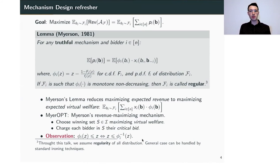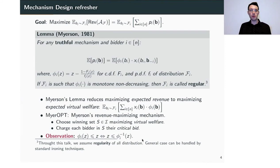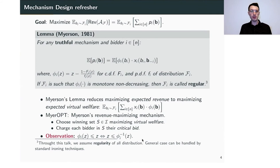In the case of regular distributions, Myerson's Lemma allows us to reduce the problem of maximizing expected revenue to that of maximizing expected virtual welfare. The optimal mechanism, which we call Myerson-Opt, works as follows: each bidder submits their valuation as their bid, the mechanism applies the function phi_i to their bid b_i and chooses the set of winners maximizing total virtual value, then charges each winner their critical bid. An important fact we will use later is that phi_i is always less than or equal to its argument, or equivalently that z is less than or equal to phi inverse of z.